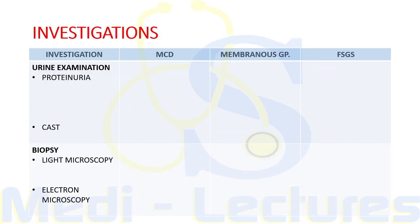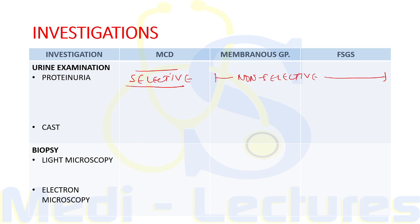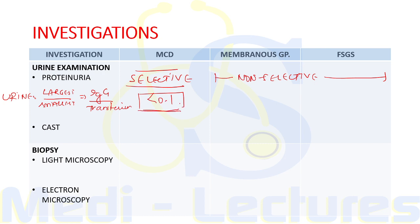An important difference in investigations: minimal change disease leads to selective proteinuria, whereas membranous glomerulopathy and FSGS lead to non-selective proteinuria. Selective proteinuria means selective loss of small molecular weight proteins. In the urine, the ratio of the largest molecular weight protein (IgG) to the smallest (transferrin) is taken. In minimal change disease, this ratio will be less than 0.1, which is termed selective proteinuria.